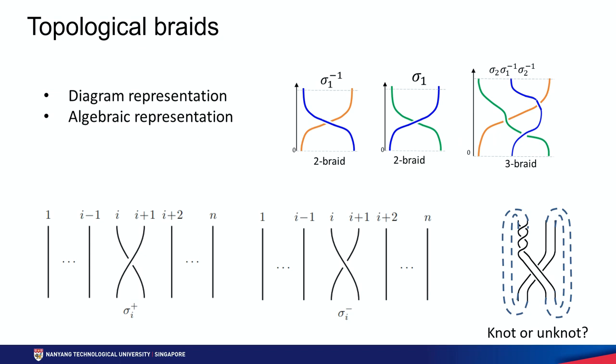Our key contribution is using the knowledge of topological braids to identify entanglements among tethered robots. Topological braids are a type of topological object that can be expressed in diagrammatic and algebraic ways. The top right figure shows two-braids and three-braids, which are braids consisting of two and three strings respectively. The important property for us is that in braids, we do not care about the shapes of the strings, but rather care about the crossings among them. That is how braids extract the topological property from a geometric object.